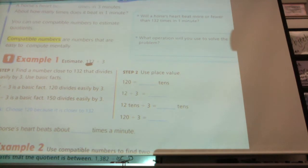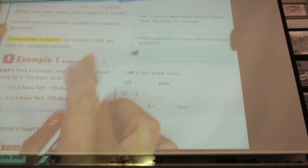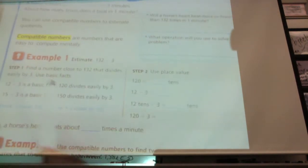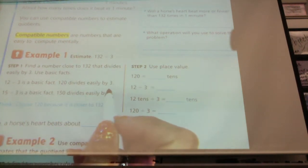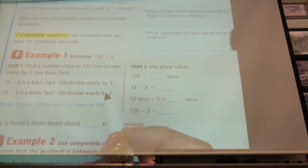Okay, what do you guys think? 12. 12 is close to 13 and is divisible by 3. So we can do 120 divided by 3, which we were doing yesterday, so you guys already know how to do that.